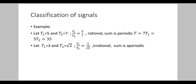Let us take another example. T1 = 3 and T2 = √2. Similarly, take the ratio T1 by T2 = 3 by √2. We can see that the ratio T1/T2 is an irrational number. So we can say that the sum is non-periodic or aperiodic. This is the method to find the periodicity of a sum of two signals.